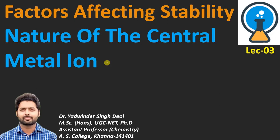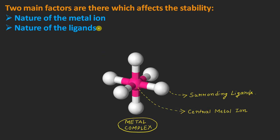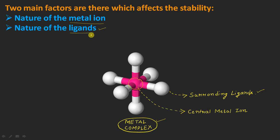In this video, we'll look at the different factors that affect the stability of a metal complex. I will be talking about only the nature of the central metal ion. Apart from this, other factors are also there, such as the nature of the ligands, which also affects the stability of any metal complex. Whatever central metal ion is present will definitely affect the stability of the overall metal complex formed.